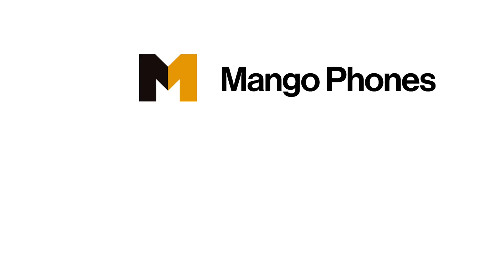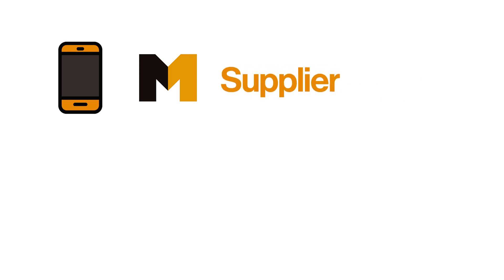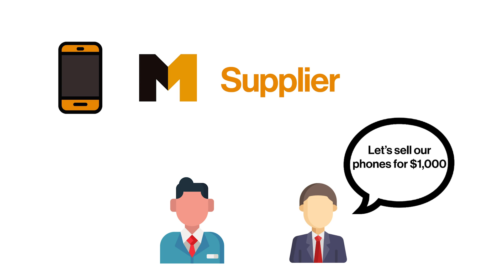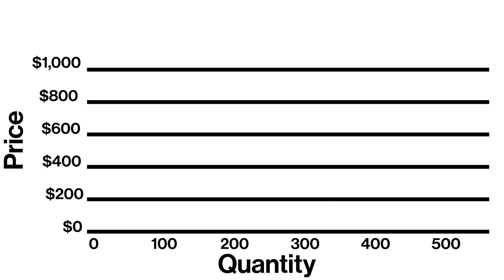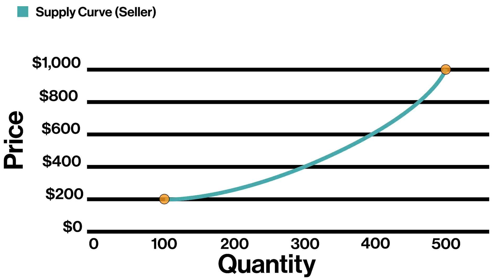Let's learn how the demand curve and supply curve are interrelated. In our example, the fictional supplier Mango Phones is in the business of selling smartphones. Since Mango Phones is the supplier, it wants to sell as many phones as possible for as high a price as possible. At $200 per phone, Mango Phones is willing to produce 100 phones, and at $1,000 per phone the company is willing to produce 500 phones. So why not just sell the phones at $1,000 each and make tons of money?